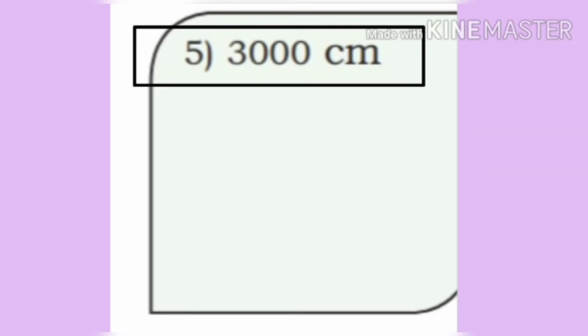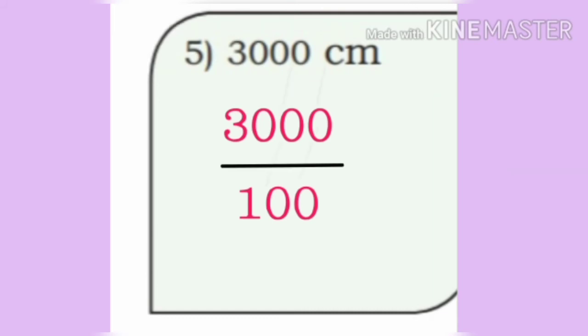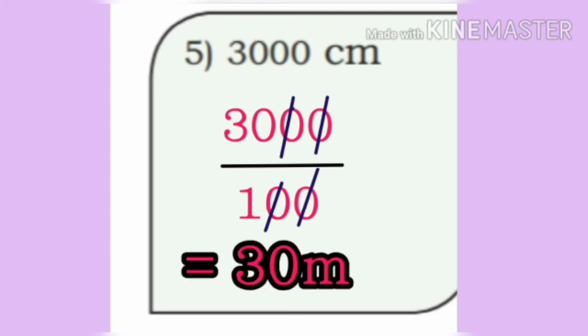Now, fifth one: 3000 centimeter. Let us divide 3000 by 100. Cancel the zeros on numerator and denominator. We get the answer as 30 meter.